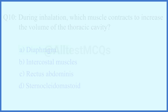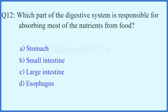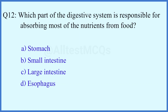Question number 11. Which hormone is responsible for regulating metabolism? Question number 12. Which part of the digestive system is responsible for absorbing most of the nutrients from food? The right answer is option B: Small intestine.